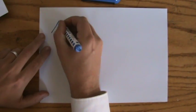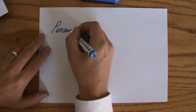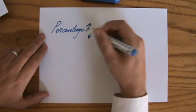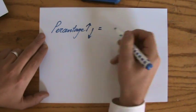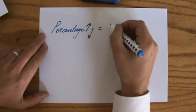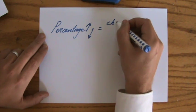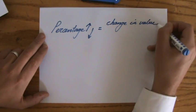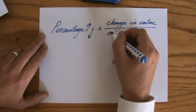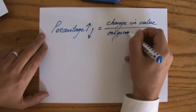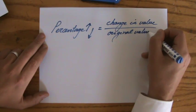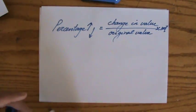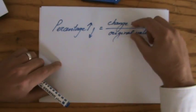The percentage increase or decrease is the change in value over the original value, times 100%. That's something you want to remember. You don't want a fraction, you want a percentage, so times 100%.